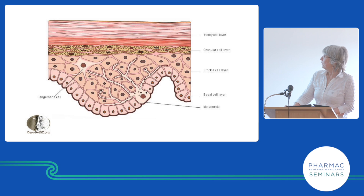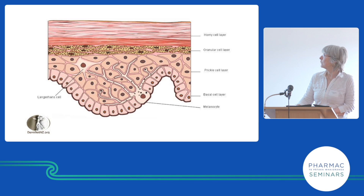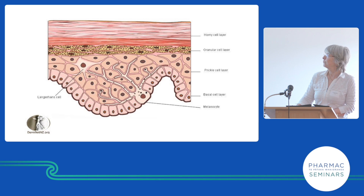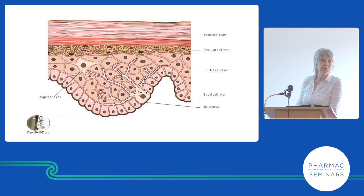The stratum corneum is the dead skin cells on the surface of the skin, sometimes called the horny layer. It just contains keratin, a natural moisturizing factor, and a few other things. The granular layer is the skin cells dying off and losing their nuclei. The basal layer is the growing cells that proliferate. We've got a melanocyte here which produces melanin in little granules, and the melanin gets squirted into the keratinocytes as they move upwards.